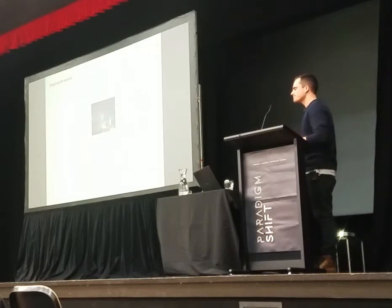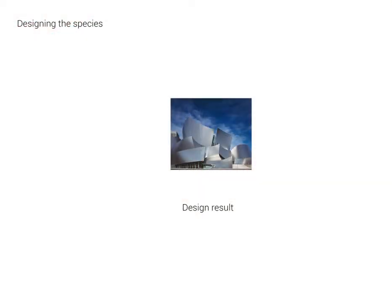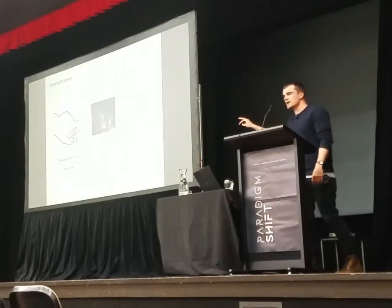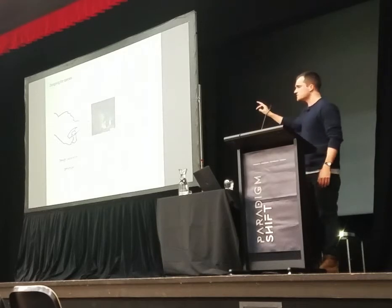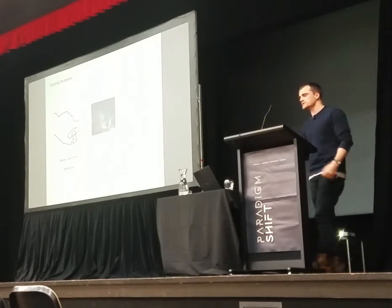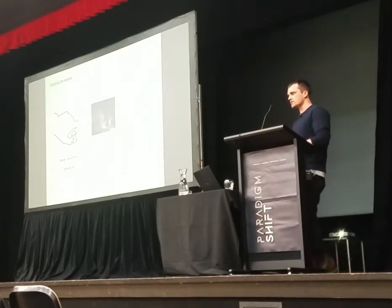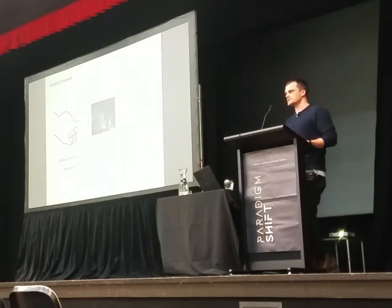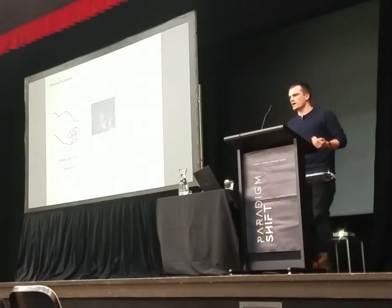Many of you probably know this and use it in your own work — this is what we call parametric design. We expose a set of parameters to our design models to make it easier to adapt designs to changing conditions. Traditionally, these tools are used in a designer-driven way: the client tells you the height of the roof needs to change, you tweak that parameter, the whole model updates, and your life is easier.